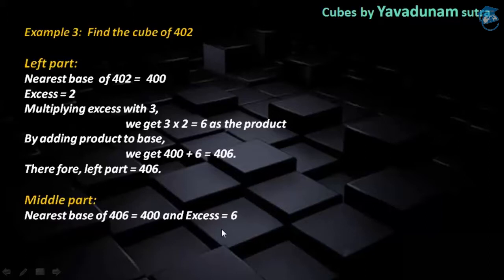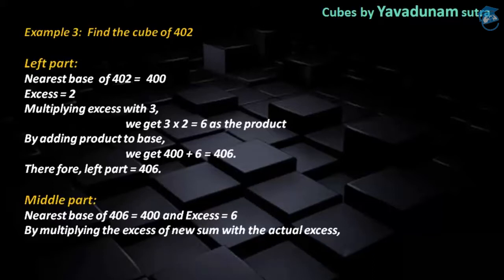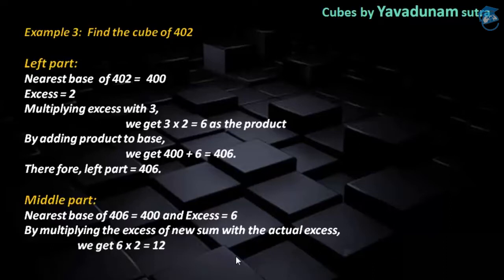After finding the nearest base and axis, moving to step number 2, we have to multiply the new axis with the actual axis. The new axis is 6 and the actual axis is 2. Therefore, by multiplying 6 × 2, we get 12 as the product. And this product is regarded as the required middle part.